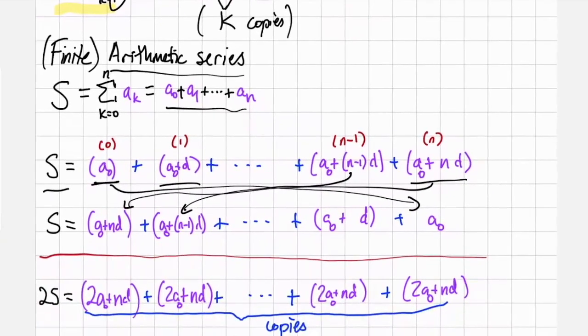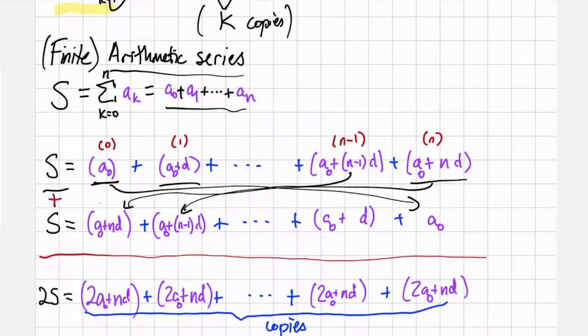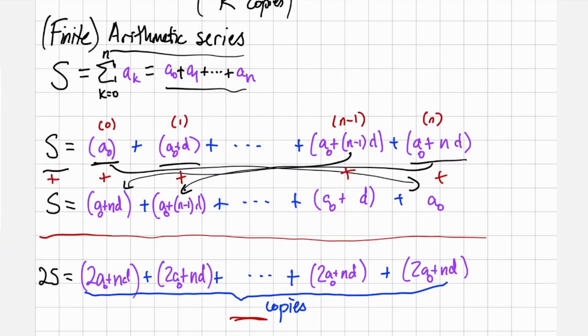The reason why we do this is now let's add these two sequences together and add each of the columns together. The sum of the terms of the series doesn't change when you turn them around, so this sum is the same, and if we add these two series together, we get two times that sum. And now let's look at each of these columns.